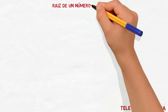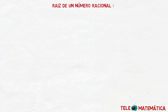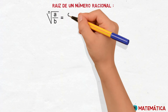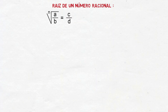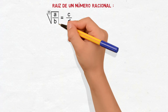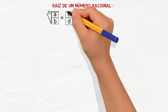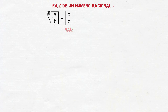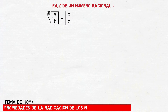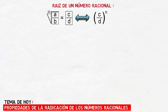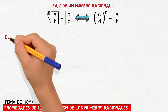Para comenzar con el video, introduciremos primeramente la definición de raíz de un número racional, dada por la expresión: raíz enésima de A dividido para B va a ser igual a C dividido para D, donde N se define como índice, A dividido para B se define como radicando, y C dividido para D se define como la raíz. Esta igualdad es verdadera si y solo si se cumple que la raíz C sobre D elevado al índice N va a ser igual al radicando A dividido para B.